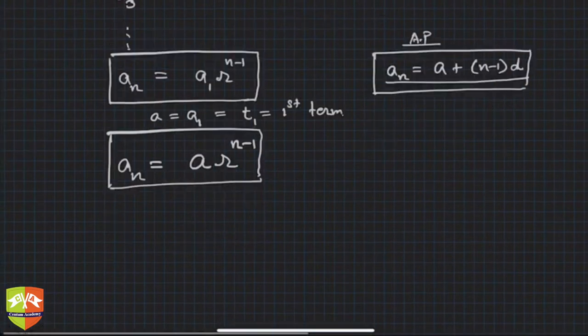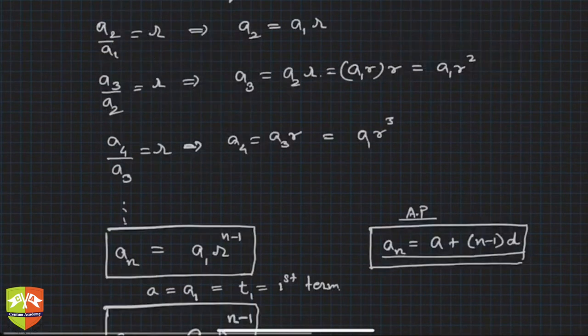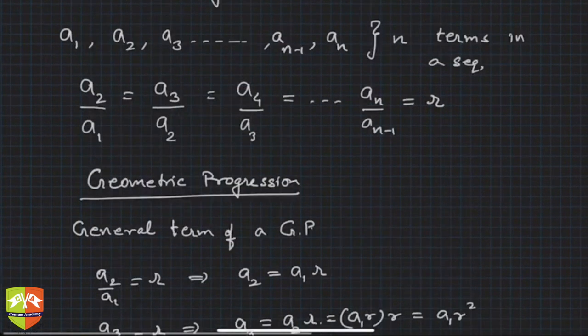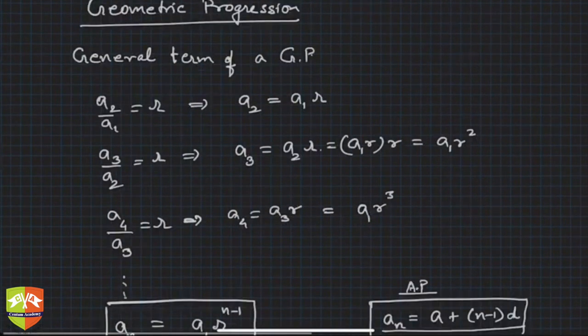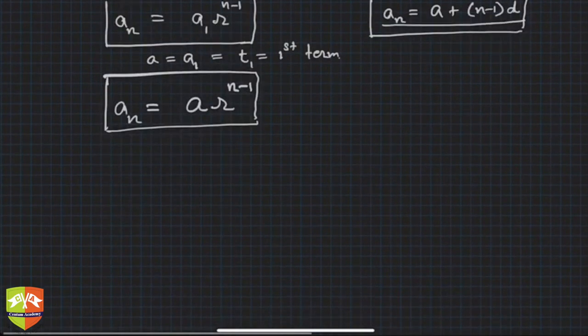Where d is the common difference, here r is the common ratio. Clearly, zero is not allowed in a GP, so none of a1, a2, a3 can be zero, because then division by zero is not allowed. r could be plus or minus, r could be greater than 1, r could be less than 1, whatever value but not zero.